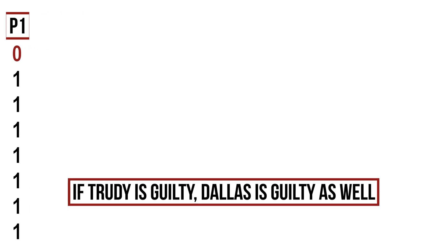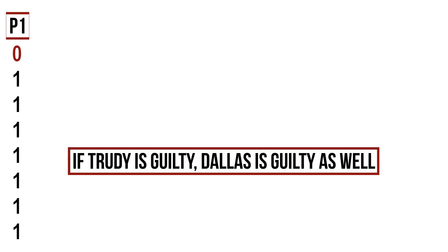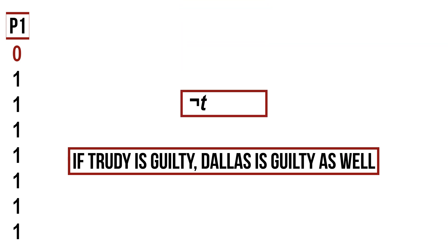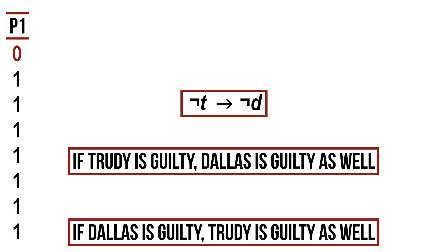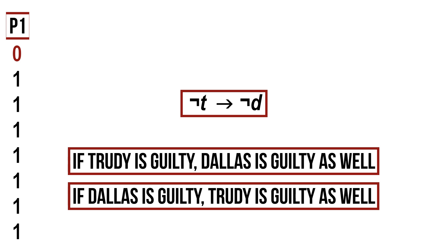We continue with the next premise. The second thing we know is that if Trudy is guilty, Dallas is also guilty — and the same holds in the other direction: if Dallas is guilty, then Trudy is guilty. Therefore, we can translate both of these premises into one formula using the biconditional.